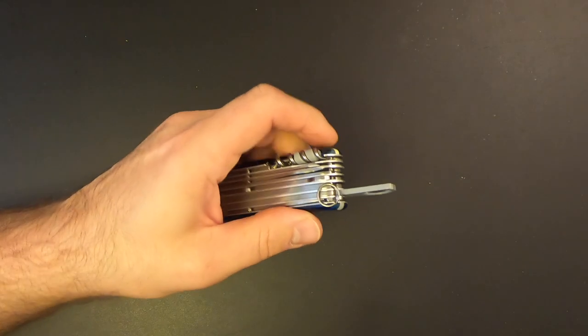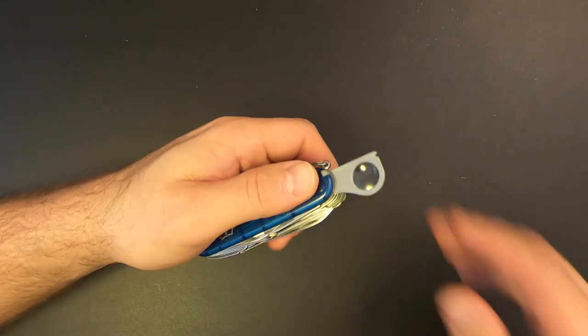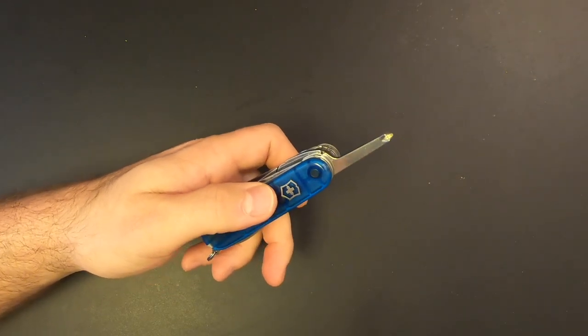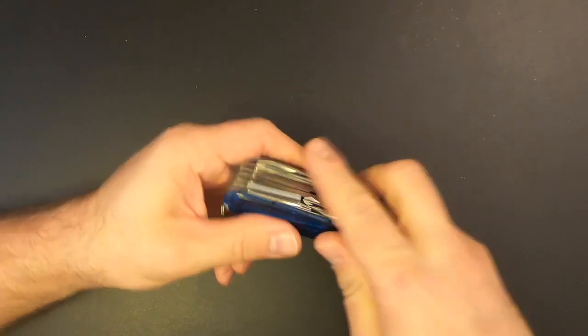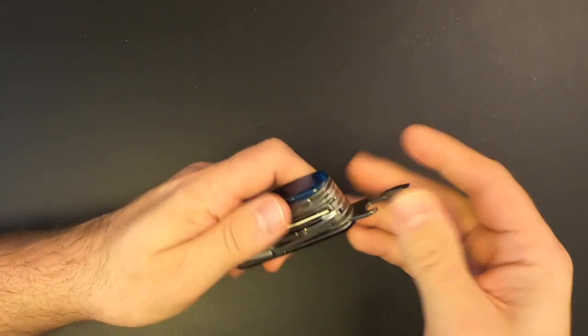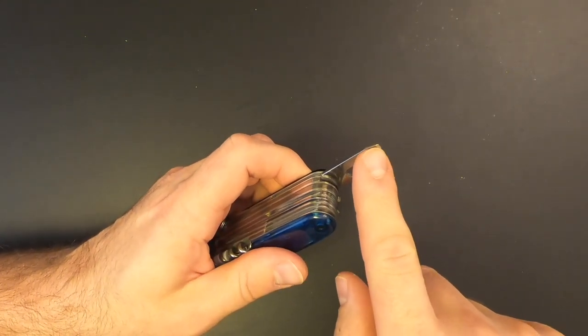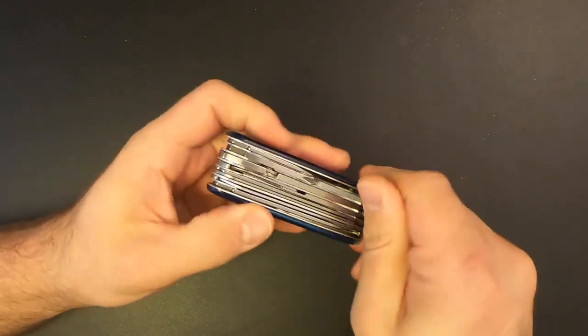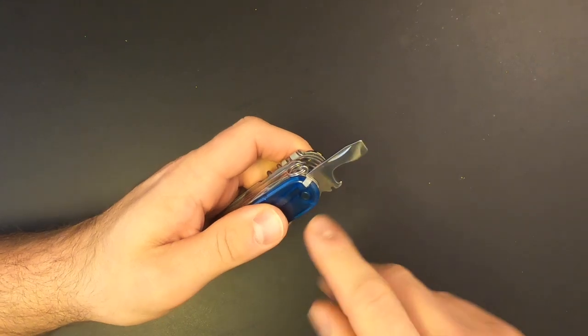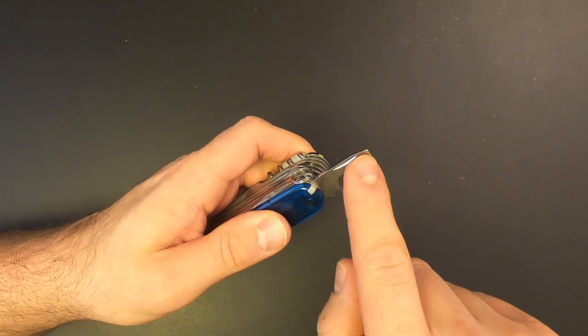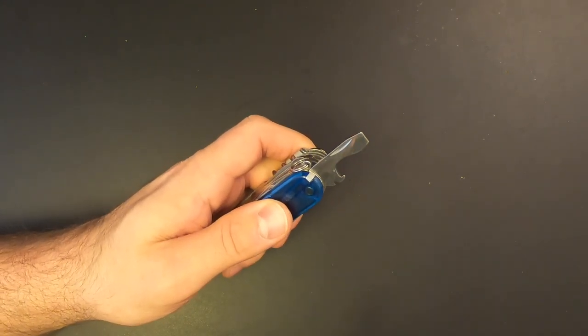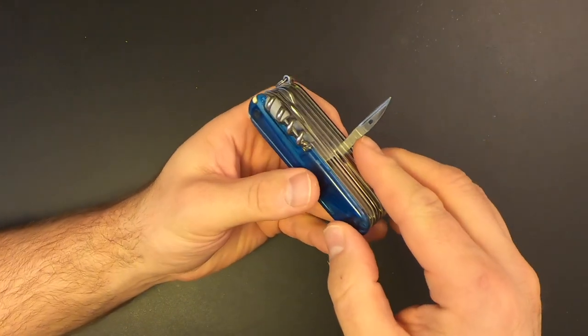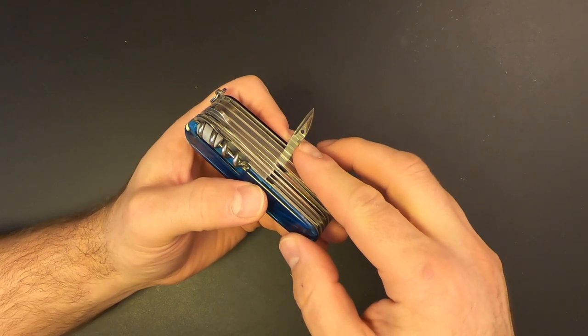Then we've got a magnifying glass. Always good to have. Then there's a Phillips head screwdriver. Then we've got the can opener that has a small flat head screwdriver on the end. And then we've got the bottle opener. And it's got a larger flat head screwdriver on the end and a wire stripping tool. On the other side, we've got this multi-purpose tool. This is a reamer, a punch, and a sewing awl.